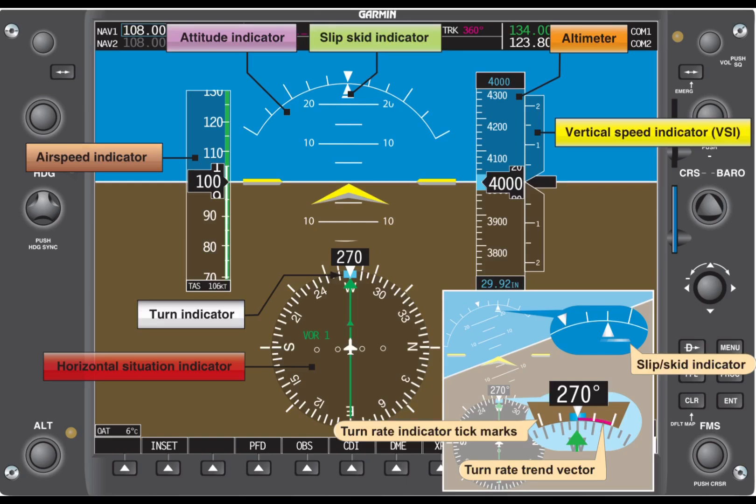Then up here above the HSI, you'll find the turn indicator. And this is how we'd know if we were in a standard rate turn or a half standard rate turn. Do you remember what that is? Comment below if you do.